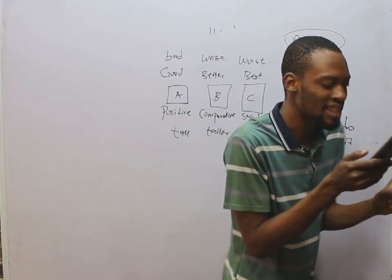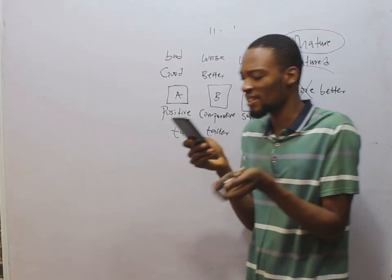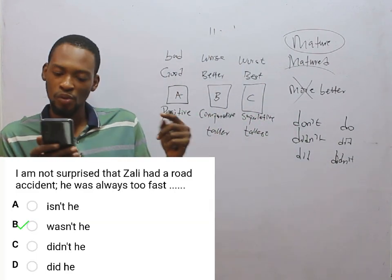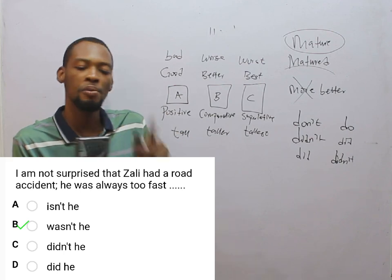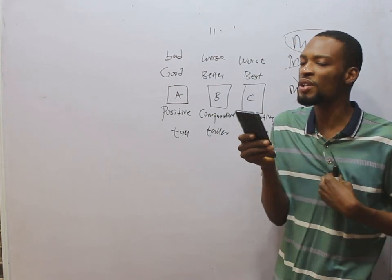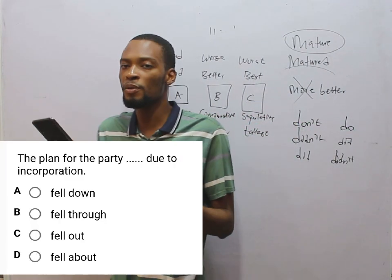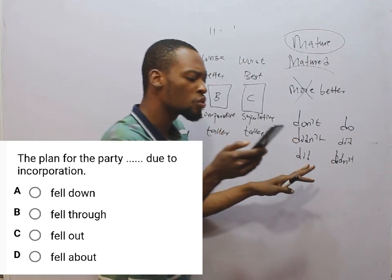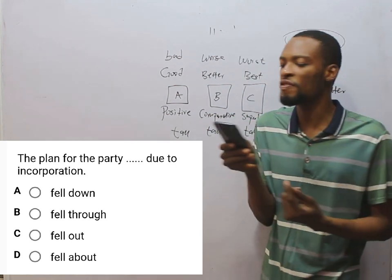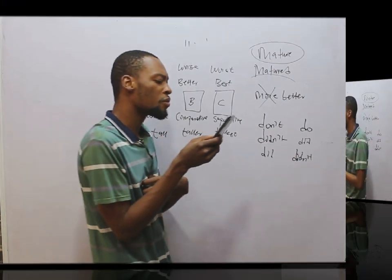I am not surprised that Zali had a road accident — he was always too fast. Question tag: the statement he was is positive, so the tag is negative: wasn't he? Option B is correct. The plan for the party dash dash due to incorporation. Incorporation means introducing a new plan. Fell through means it did not happen — the plan for the party fell through due to incorporation.